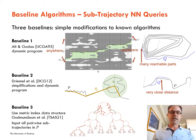For the baseline three algorithm, we simply use an existing metric index data structure which does nearest neighbor searches under the continuous Fréchet distance on a set of input trajectories. In this setting, we insert all pairwise sub-trajectories in P into the metric index.